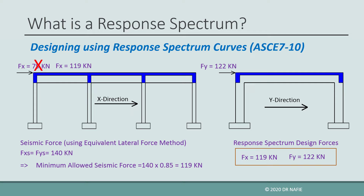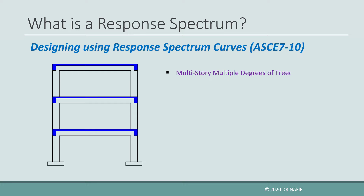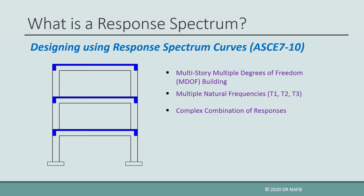In this lecture, we have shown how to design a single-story single degree of freedom building using the response spectrum method. But what about a multi-story building? A multi-story building is a multi-degree of freedom structure that has more than one natural time period in each direction. A three-story building, for example, has at least three natural time periods in each direction. Therefore, the response of this building to earthquake motion will be a complex combination of responses. The seismic design of multi-story buildings using response spectrum analysis will be explained in a separate lecture.